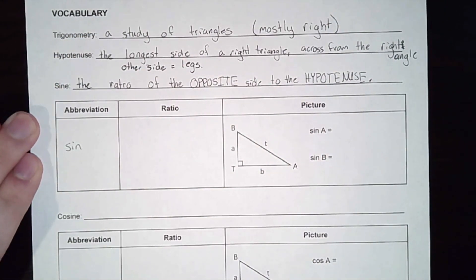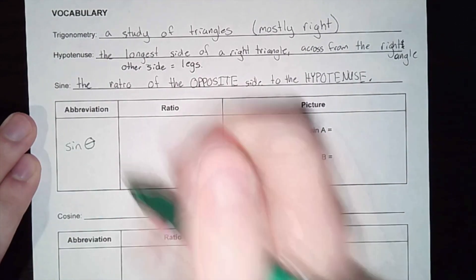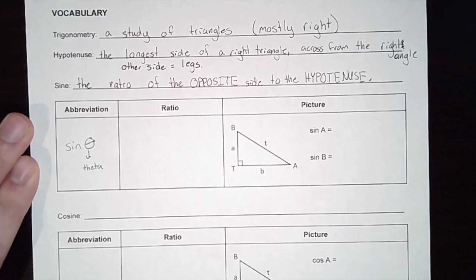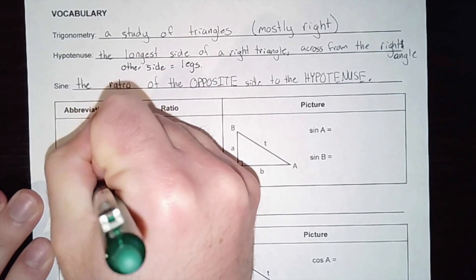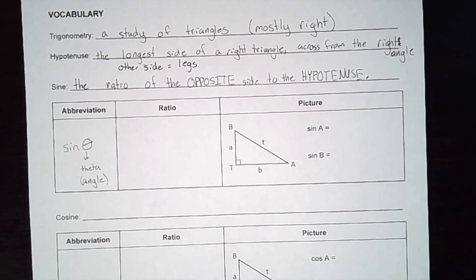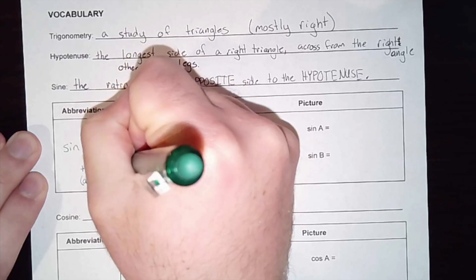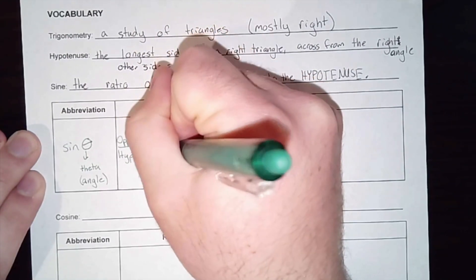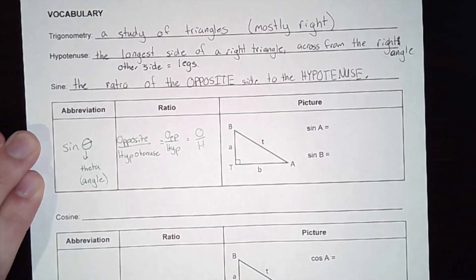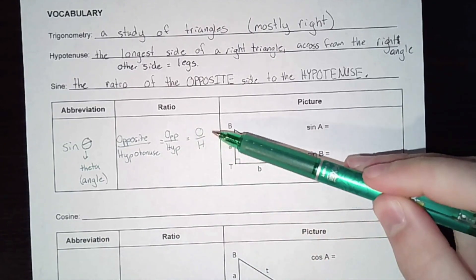Theta is the angle — if I don't use theta I can put a number in there for the angle. The ratio itself is the fraction we're talking about: for sine it is opposite over hypotenuse, which we sometimes abbreviate as opp over hyp or simply O over H. In your notes I'd like you to write them out, but as we move forward we'll pretty much stick to O and H.